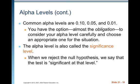You have an option — almost an obligation — to consider your alpha level carefully and choose an appropriate one for the situation. The alpha level is also called the significance level. When we reject the null hypothesis, we say that the test is significant at that particular level. So if we select five percent, we would say it's significant at the five percent level.